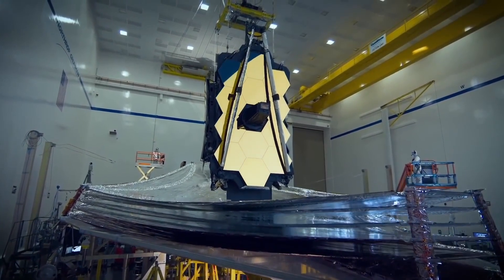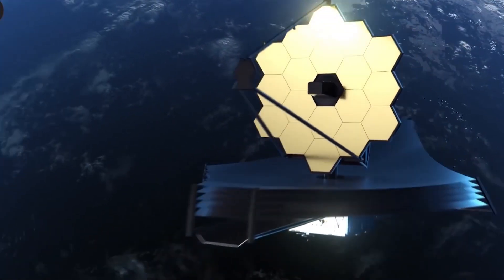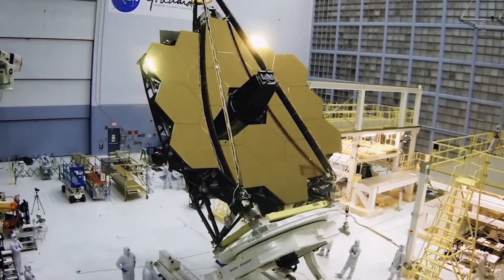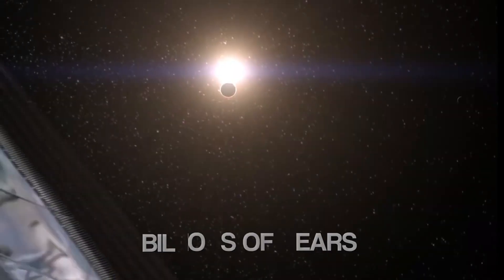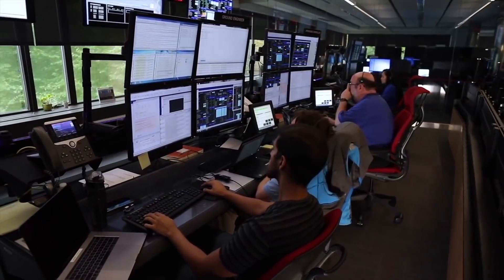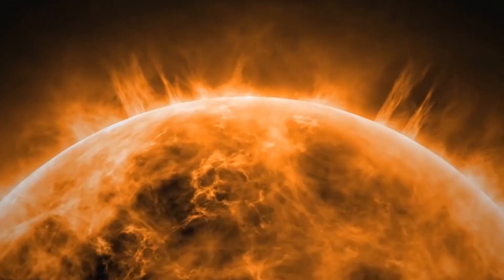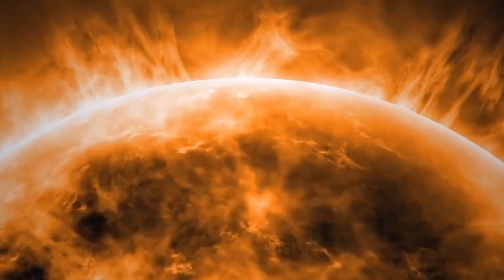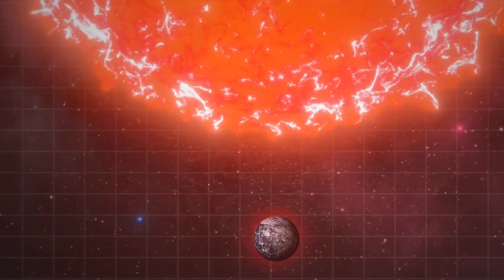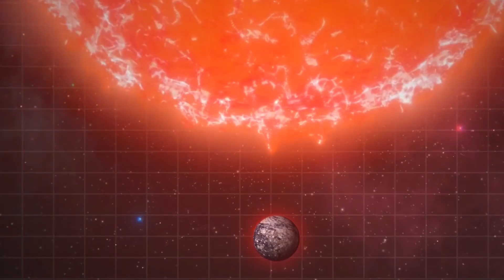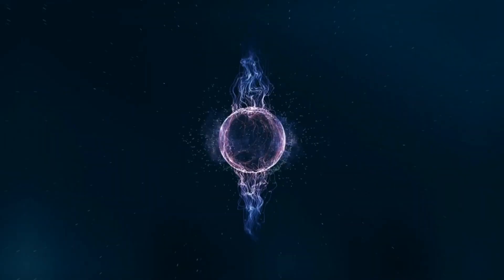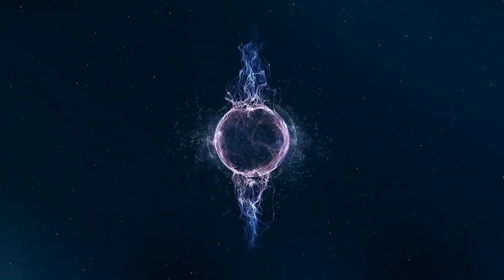The James Webb Telescope is the most powerful observatory ever built. It's designed to look back billions of years into space, and provide scientists with new information about our universe. The JWST's primary goal is to observe near-infrared light, which can be used to peer through clouds of dust in space that blocks our view of what's happening farther away from us.